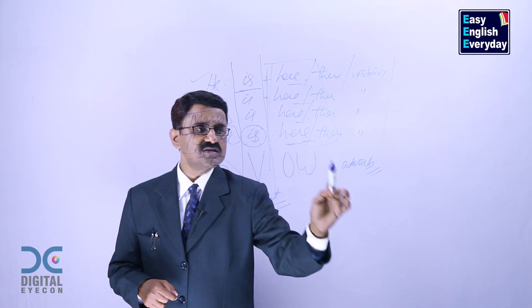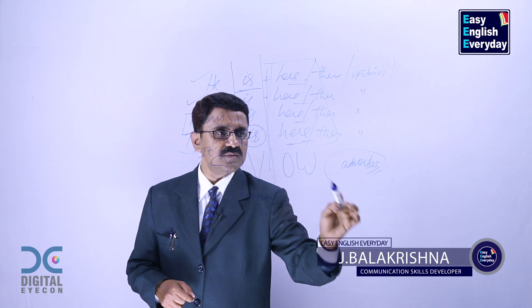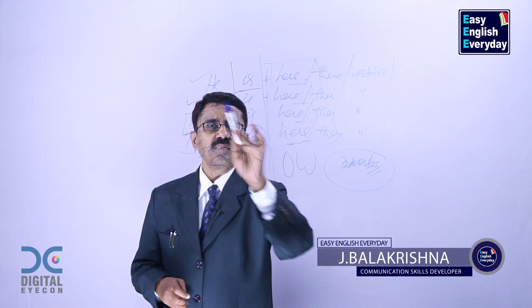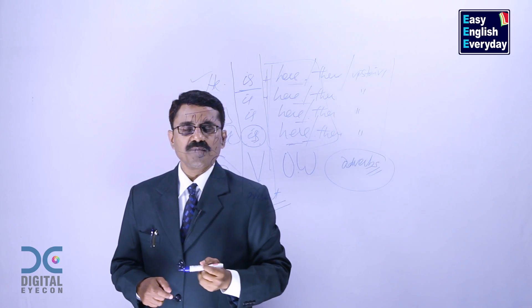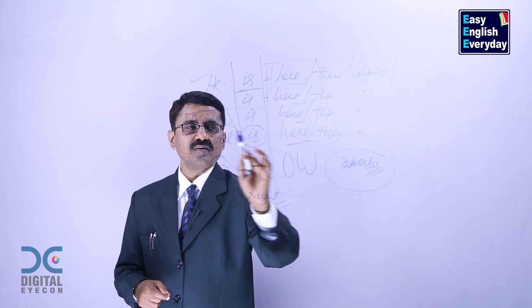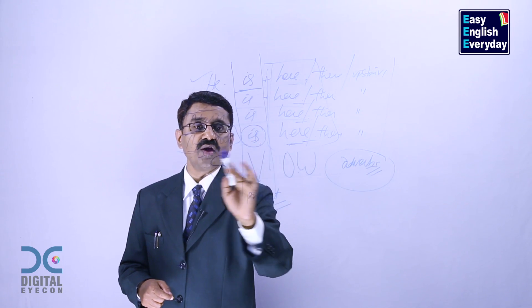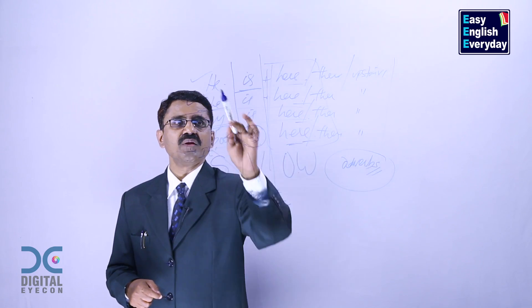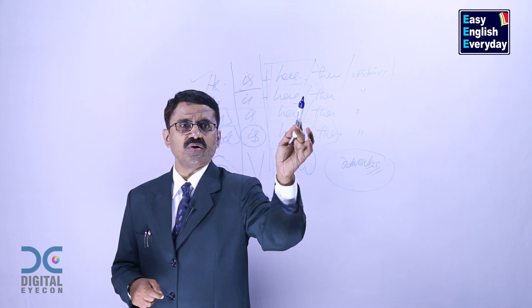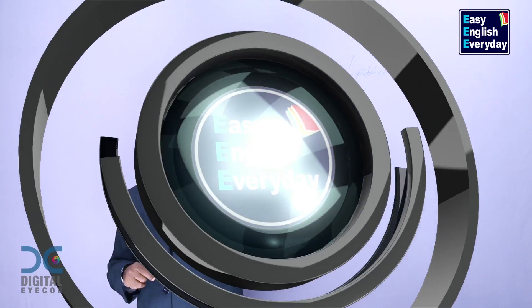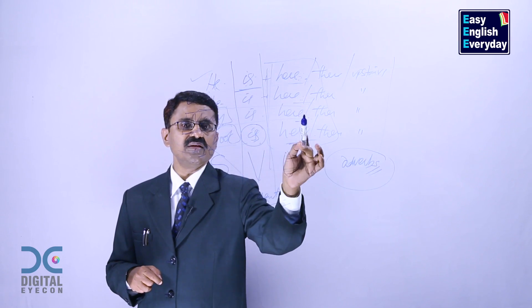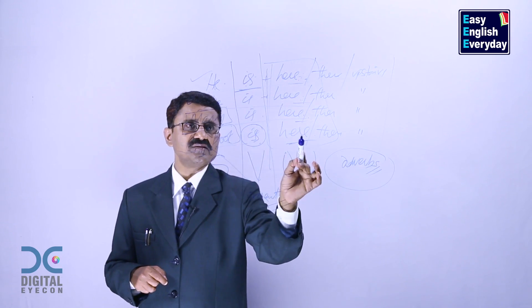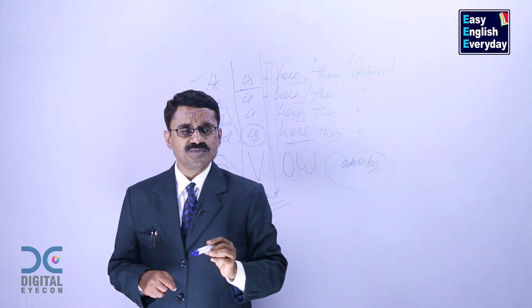This type of words are called adverbs. He is everywhere. She is everywhere. Mary is everywhere. Violence is everywhere. He is abroad. She is abroad. Mary is abroad. He is late. She is late. Mary is late. The train is late. These are called adverbs.